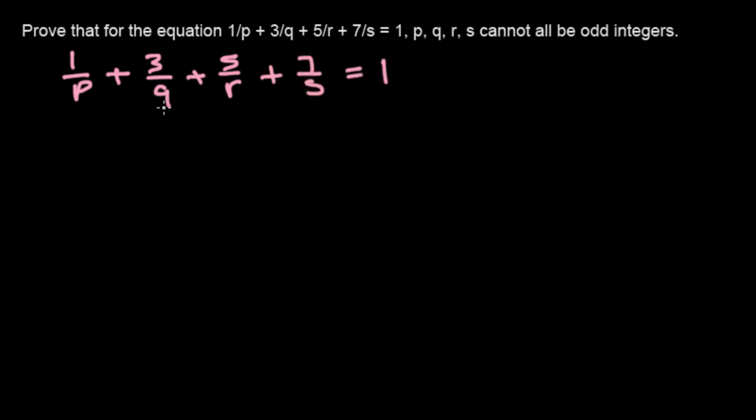The question is asking that p, q, r, s cannot all be odd integers. So to solve this problem, we're going to use contradiction.